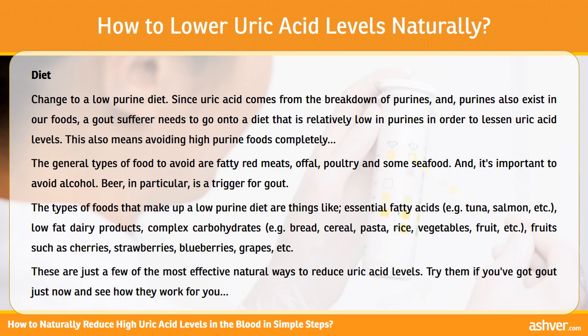Change to a low-purine diet. Since uric acid comes from the breakdown of purines, and purines also exist in our foods, a gout sufferer needs to go onto a diet that is relatively low in purines in order to lessen uric acid levels. This also means avoiding high-purine foods completely. The general types of foods you avoid are fatty red meats, offal, poultry, and some seafood.